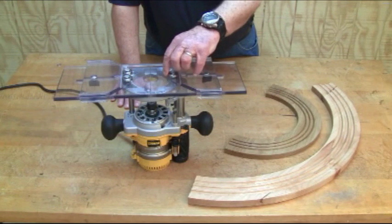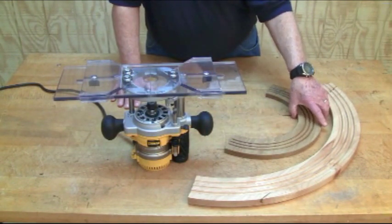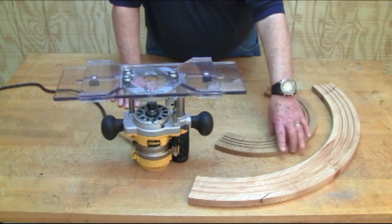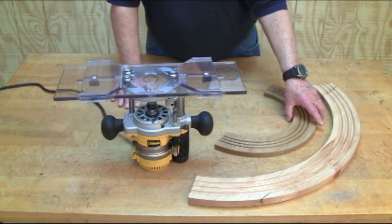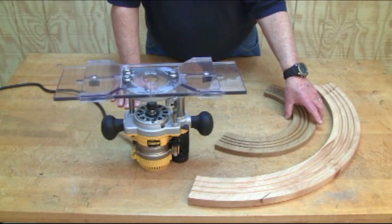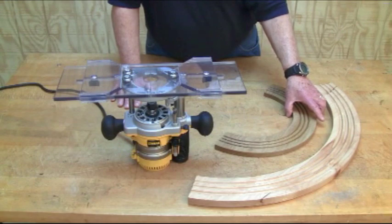Because the tracking of the bearings is so sensitive, any variation in the edge of your arch or your circle will show up. So we recommend using a circle jig with a spiral cutter to give you a nice, clean, smooth edge.